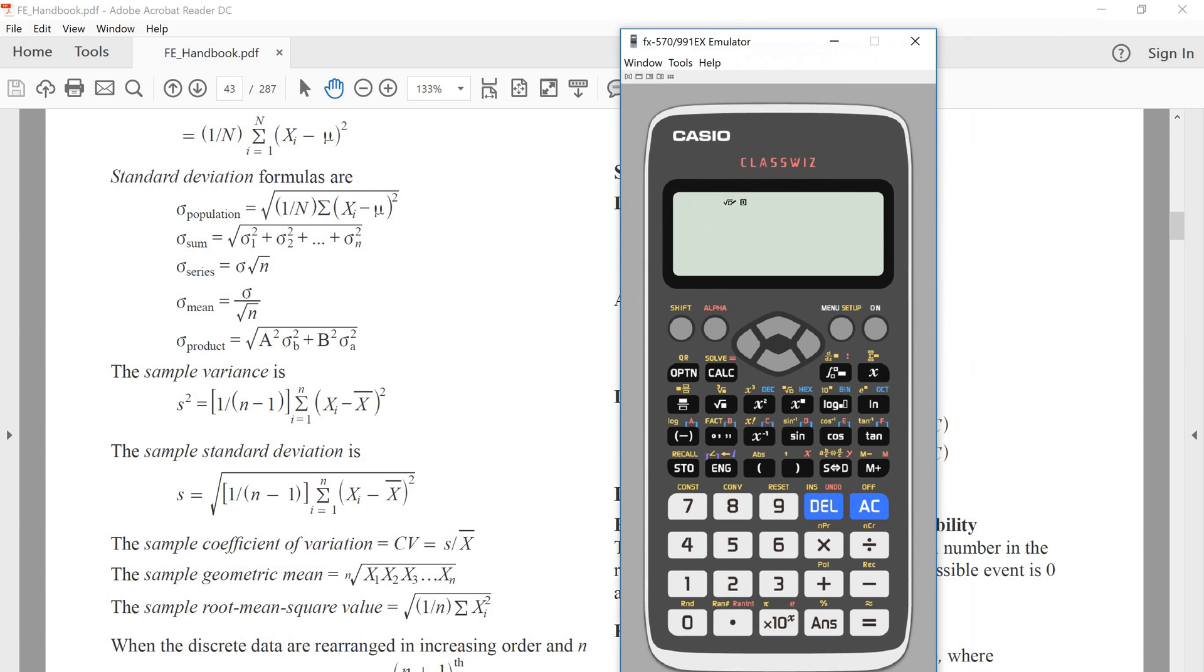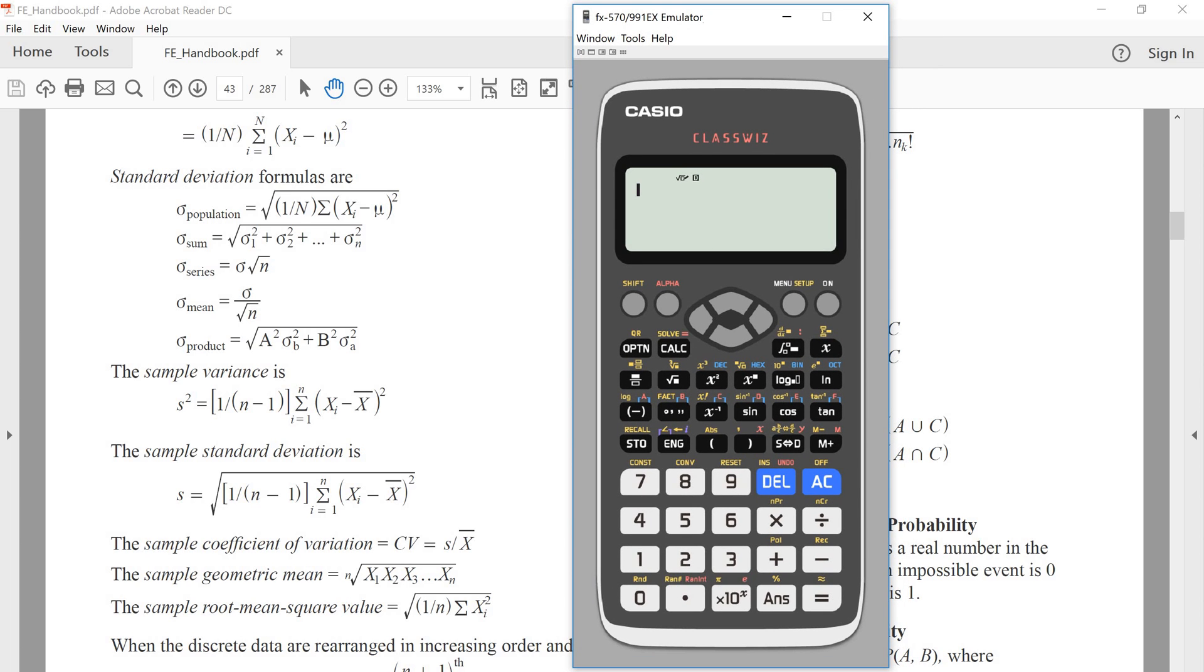Here I have the Casio calculator. To solve this, we can go and hit the menu button. If we scroll down to 6, we have a statistics section. We can go ahead and hit the equal sign, and then we want to hit the one variable, so that's 1. Now we can simply enter our data set.